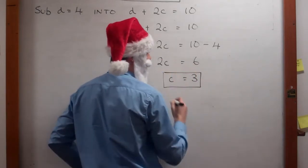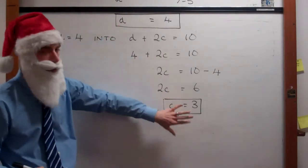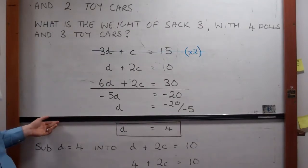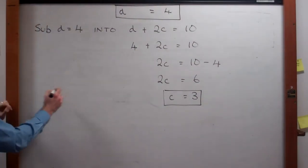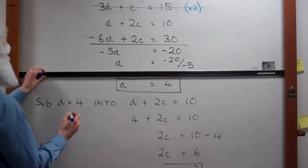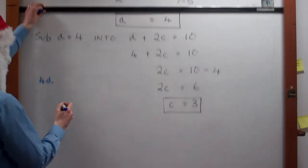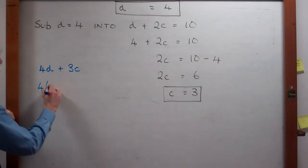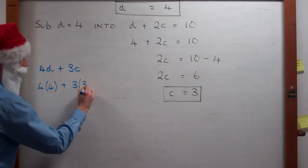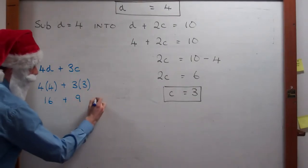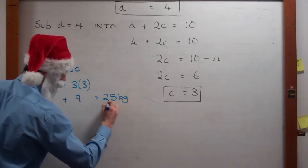Excellent. So D is 4 and C is 3. Let's look back and see what we were asked to do in the first place. It says what is the weight of sack 3 with 4 dolls and 3 toy cars? 4 dolls and 3 toy cars. 4 dolls are 16, plus 9 is 25 kilograms. So the weight of sack 3 equals 25 kilograms.